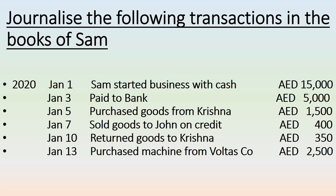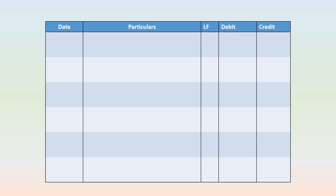Let's journalize the transactions in the books of Sam. Sam is the businessman and he has performed some transactions which have to be journalized. The format of a journal has five columns: the first column is date, the second column is for the accounts to be recorded, the third column mentions LF — ledger folio — which is the page number of the ledger book, then the debit column, and the credit column.